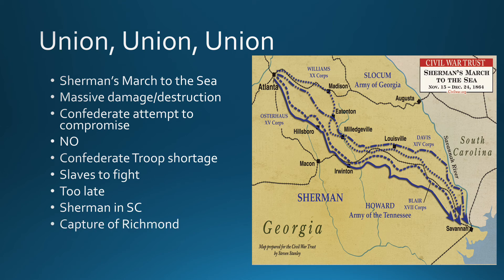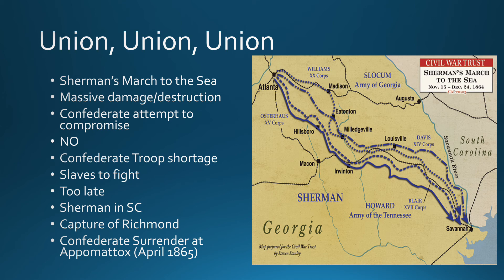In early April, on April 3rd, the Union officially captures Richmond, the capital of the Confederacy — a signal that defeat is imminent. A few days later, Lee formally surrenders to Grant at Appomattox Courthouse in Virginia. The war has basically lasted just about four years: Fort Sumter was April 1861, and the Confederate surrender at Appomattox was April 1865.